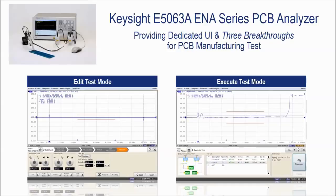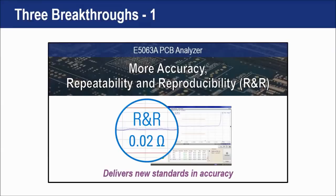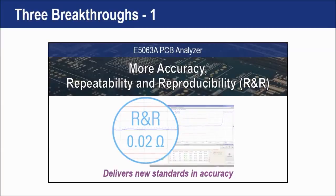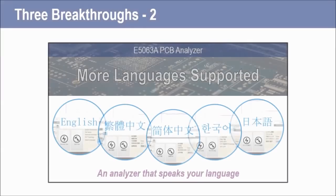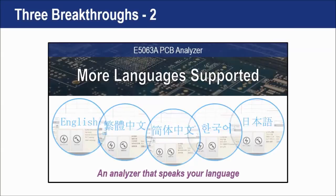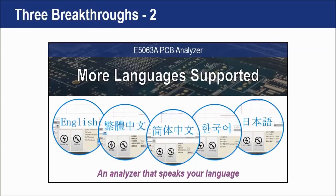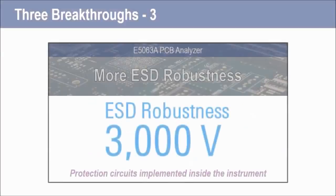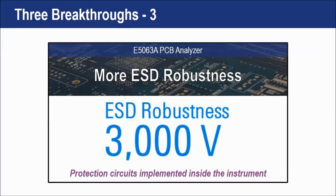In addition to the user interface, the E5063A PCB analyzer achieves three breakthroughs in PCB impedance tests. First, it provides more measurement accuracy, repeatability, and reproducibility to improve measurement yield. Second, more languages are supported to enhance operation efficiency. Lastly, more ESD robustness frees the instrument from ESD damage, resulting in lower cost of ownership and less instrument downtime.